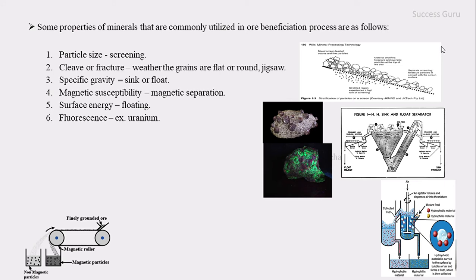The next property is fluorescence. For example, uranium: by absorbing ultraviolet rays or other ranges of light, it emits light, and such a property is called fluorescence. You can simply find and mine uranium with the help of this fluorescence property.